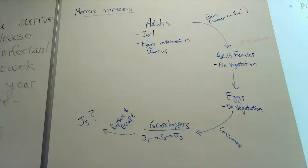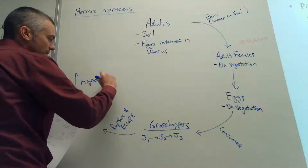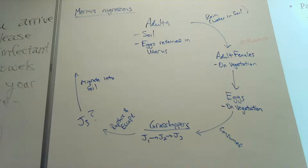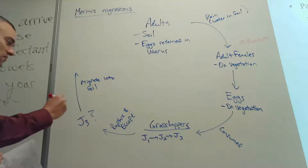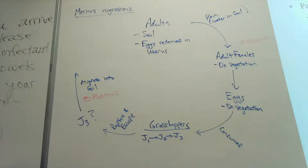We have a juvenile stage that leaves the grasshopper through rupture of that host — which means the host dies. I'm going to presume this is our J3. Once we escape from that grasshopper, there's movement where these things migrate into the soil. These larval stages are actually negatively phototactic, so our adults were positively phototactic while our juveniles are negatively phototactic, driving movement into the soil.